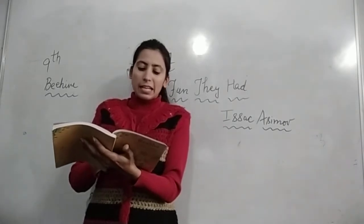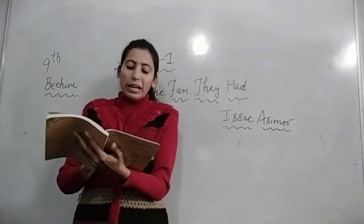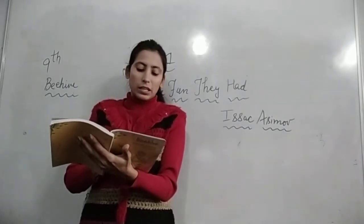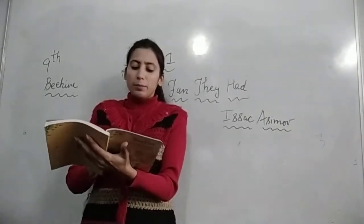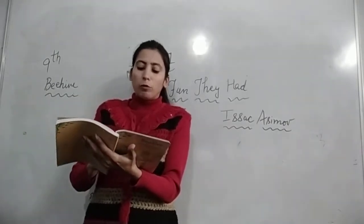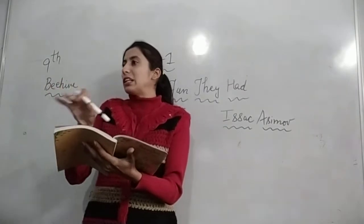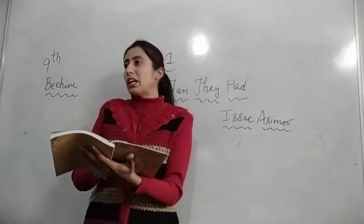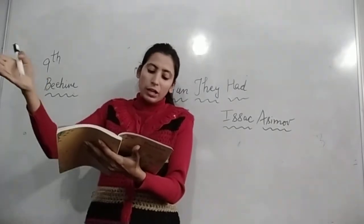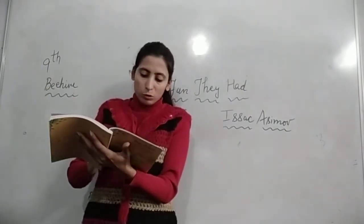Same with Margie. She was 11 and had not seen as many telly books as Tommy had. Margie जो थी वो 11 years की थी, और उसने इतनी telly books नहीं देखी थीं जितनी Tommy के पास थीं. He was 13. She said where did you find it? Margie ने पूछा, कहाँ से मिली तुम्हें ये? In my house, he pointed without looking, because he was busy reading — in the attic. Attic का मतलब है roof के नीचे छोटा सा space जिसे store room बोला जाता है. Tommy book reading में इतना busy था कि बिना देखे attic की तरफ इशारा कर दिया.